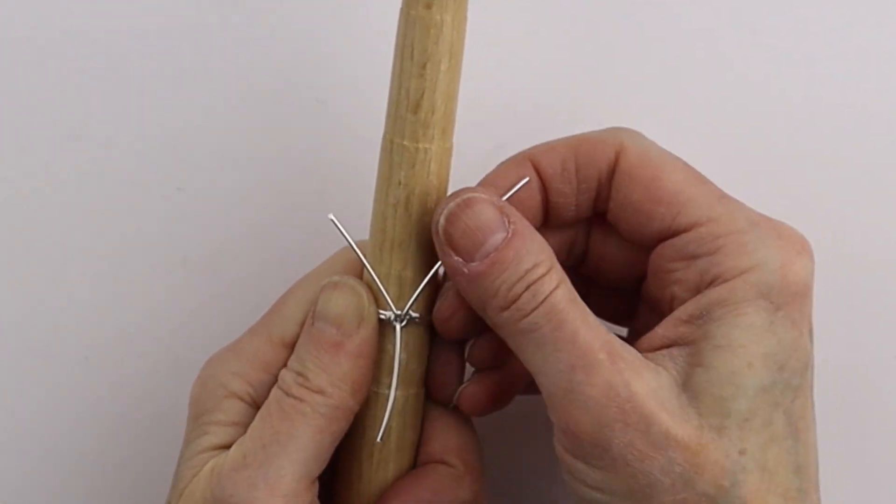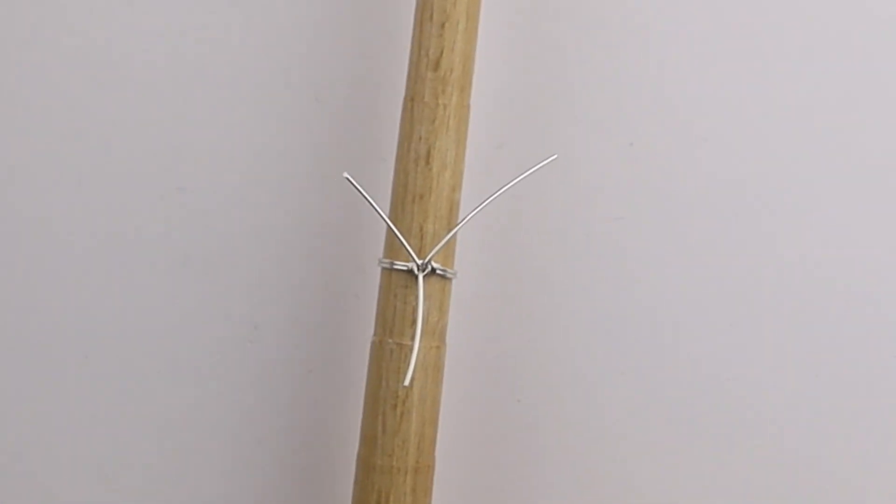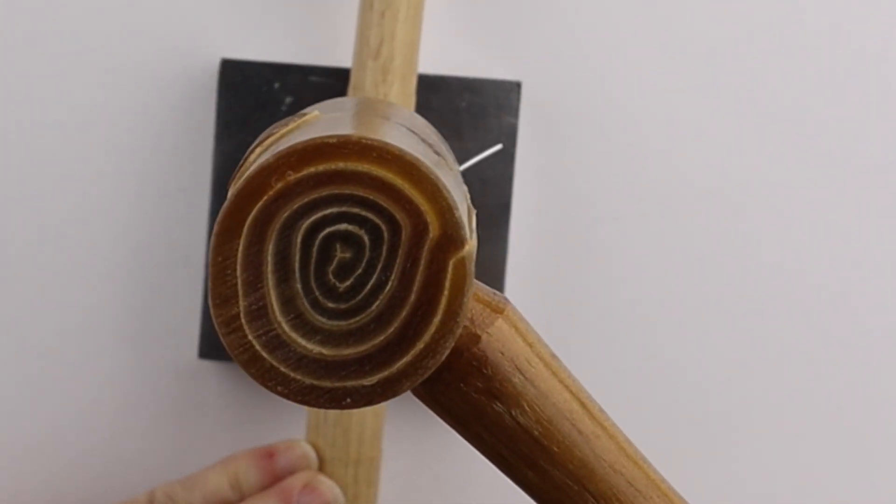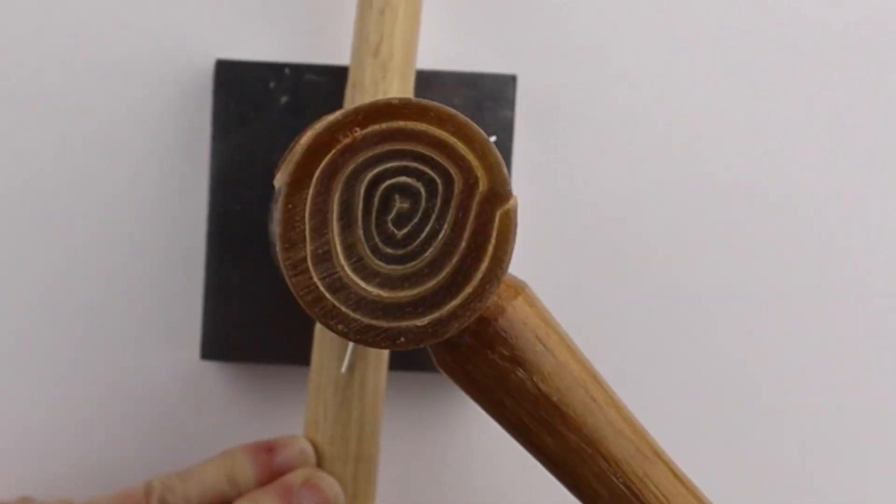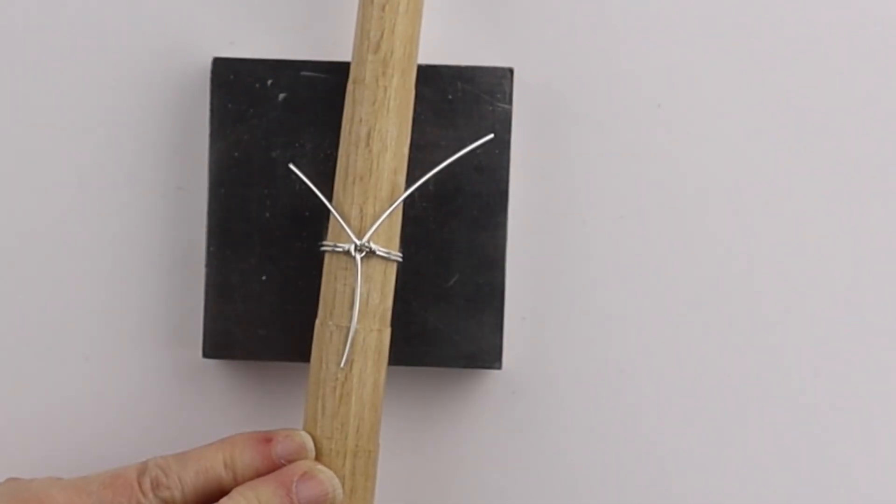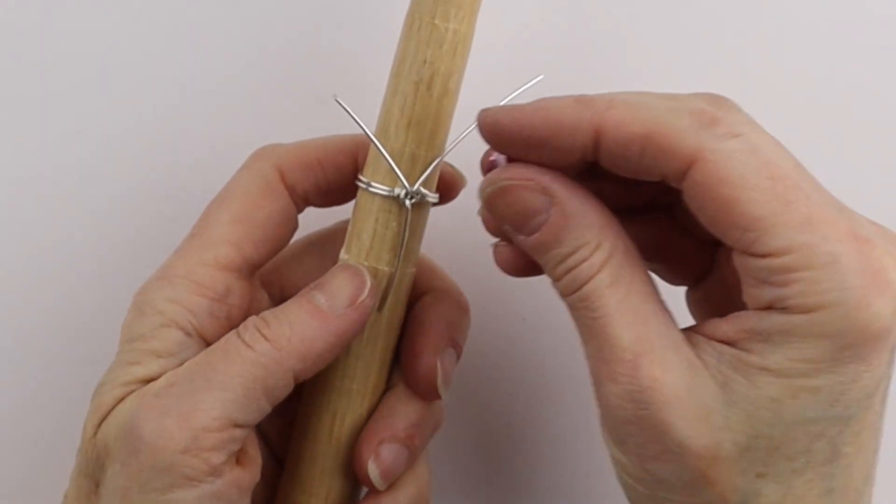We're going to push two of these down, one, two. The middle one's going to go straight up. We'll just put it on a steel block and get our rawhide hammer and just push it down, not to flatten it, but just to get it more securely down.